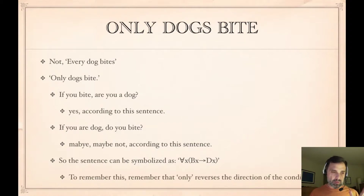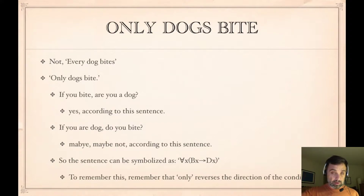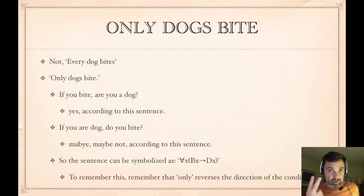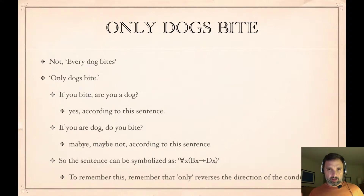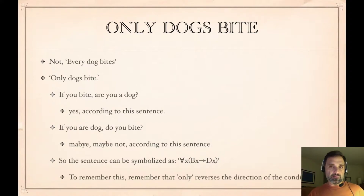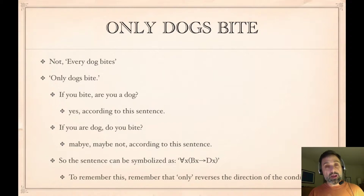The way to remember this is to think back to chapter 1, where we have 'if' and 'only if.' The 'only if' reverses the direction of the conditional — 'if' flags the antecedent, 'only if' flags the consequent. So 'only' is a reversal of 'every.' What 'only' does here is basically the same as what it does in chapter 1: it reverses the conditional order inside the universal.